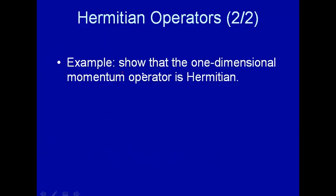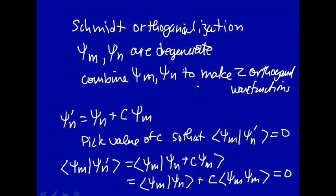Let's go ahead and show that the one-dimensional momentum operator is Hermitian. Momentum is a measurable, so we want the things that we measure from momentum to be real numbers, which means that the operator associated with momentum has to be Hermitian. So let's just show that.